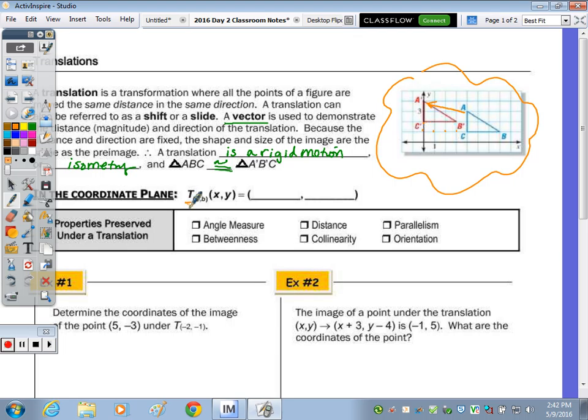In the coordinate plane, the capital T is the symbol, just as the lowercase r is for reflection. And you take the point that's here, you take that number that's there, it's known as A, you add that to your X, and then the number here, B, you add that to the Y.